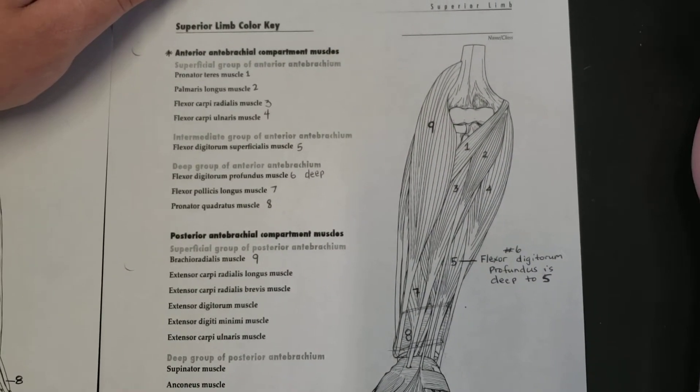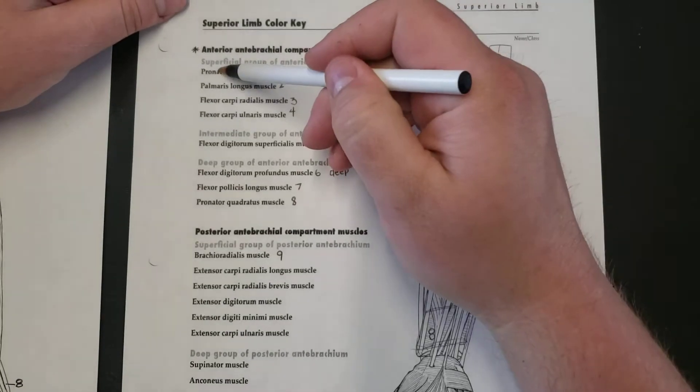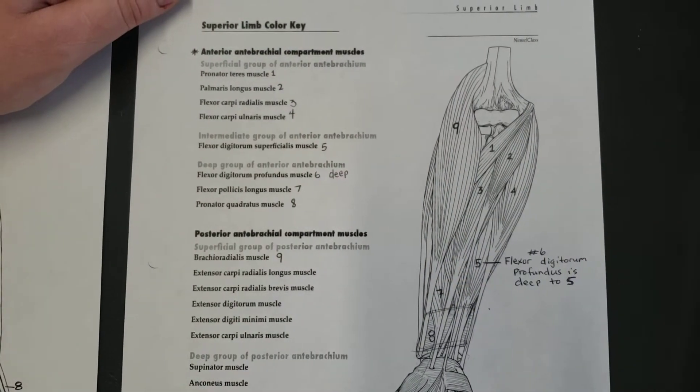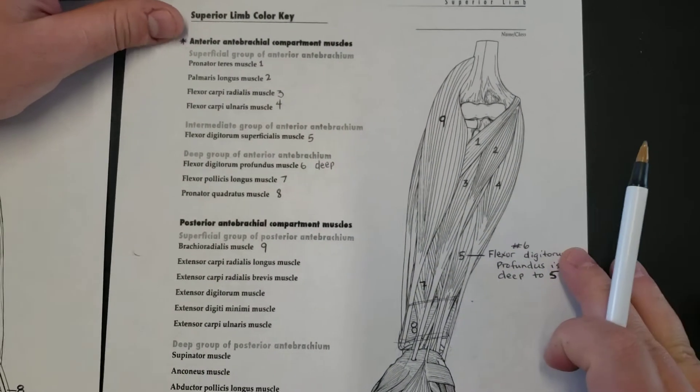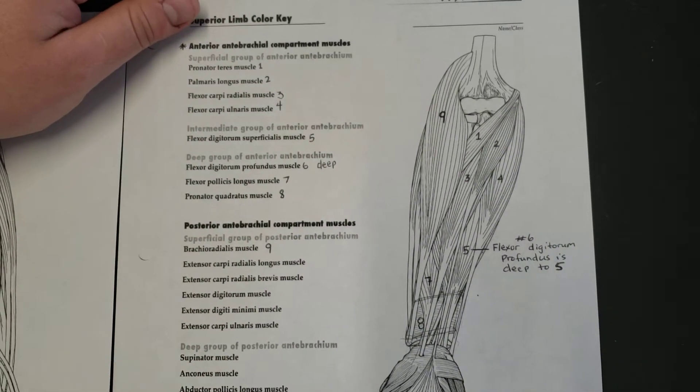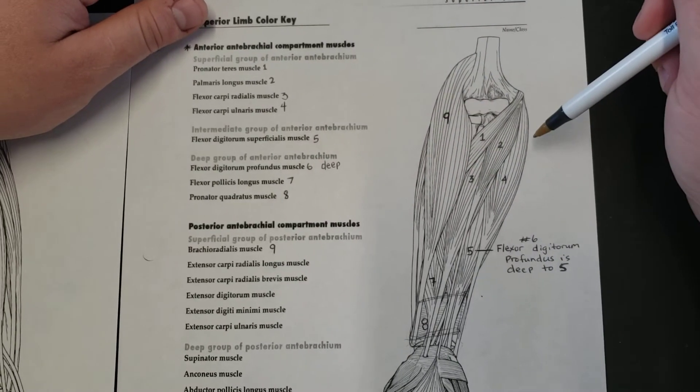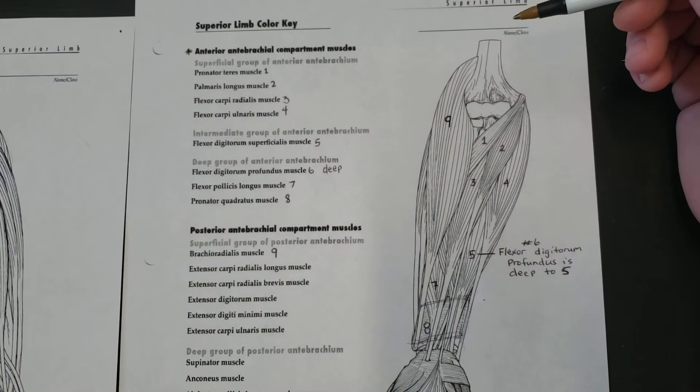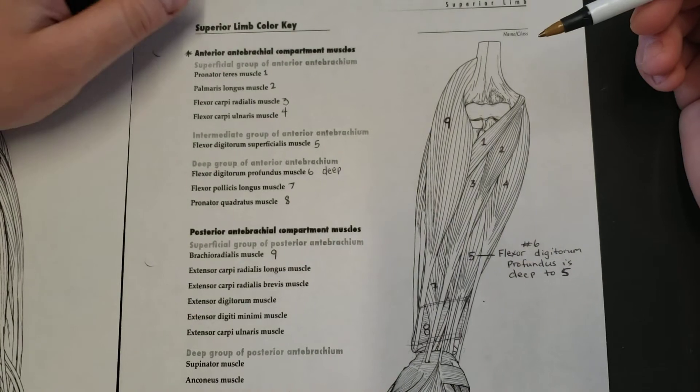To start off we have this pronator teres muscle. The pronator teres muscle is going to be found right through here, pre-marked number one. When you're looking at these muscles they're actually very descriptive when you break it down.